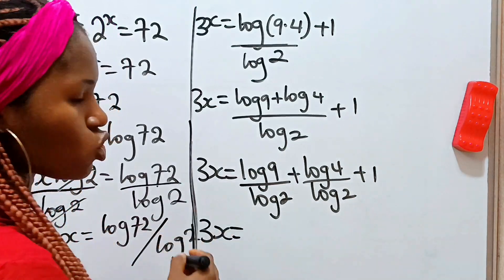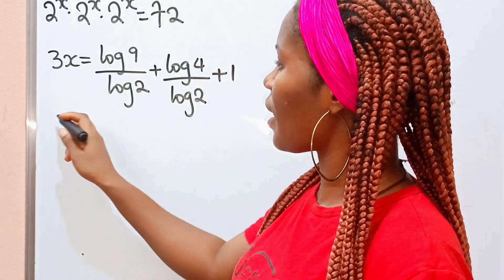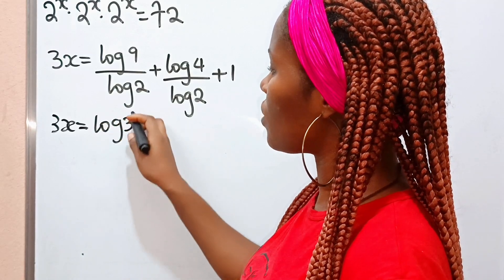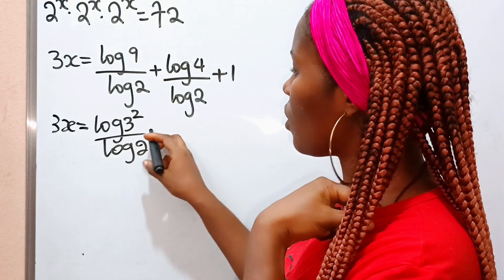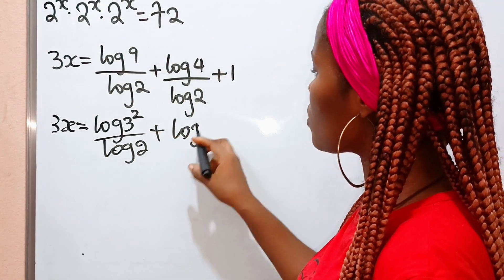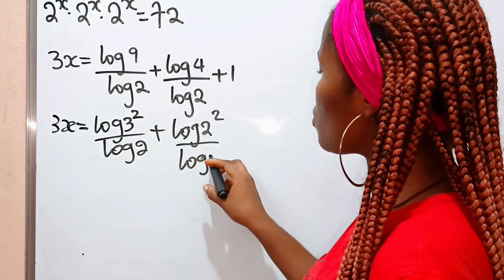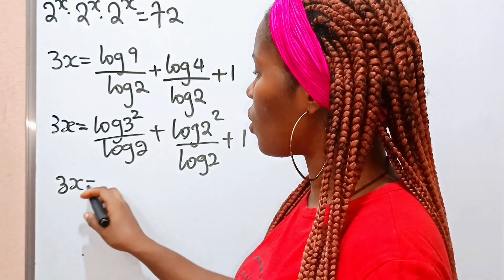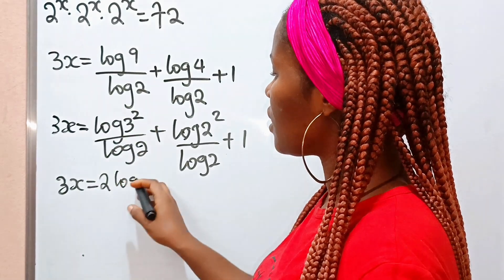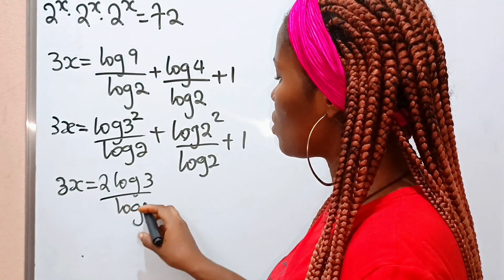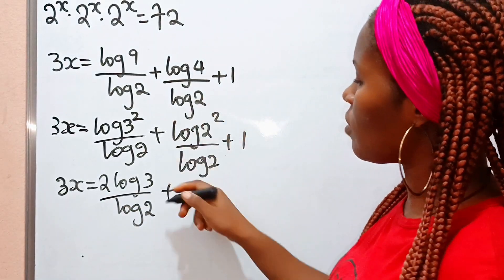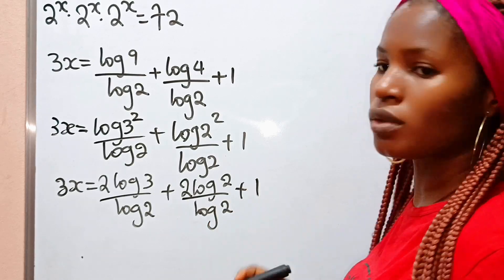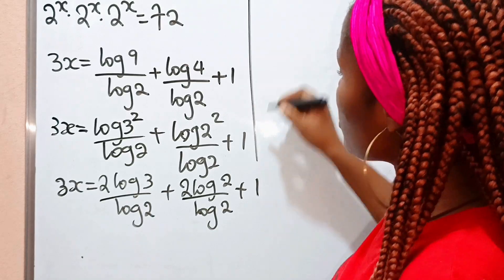Now 9 can be expressed as 3 squared, and 4 can be expressed as 2 to the power of 2. So we have log of 3 squared divided by log 2, plus log of 2 squared divided by log 2, plus 1. Applying the power rule, this 2 comes down to multiply log 3 divided by log 2, plus this 2 comes down to multiply log 2 divided by log 2, plus 1.